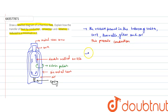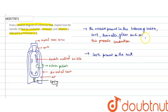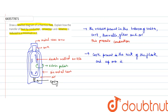Convection is prevented in the thermos flask with the help of the cork present in the neck of the flask, and a cup over it. This prevents convection.